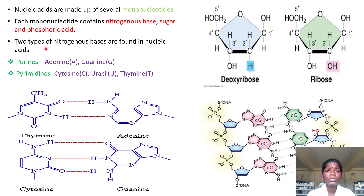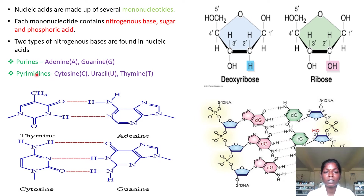The two types of nitrogenous bases found in nucleic acids are purines and pyrimidines. The purine bases are adenine and guanine. The pyrimidine bases are cytosine, uracil, and thymine. These are the five nitrogenous bases involved in nucleic acids. In DNA, it contains adenine, guanine, cytosine, and thymine.